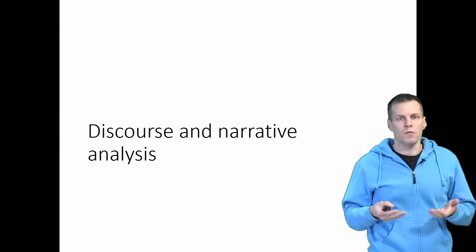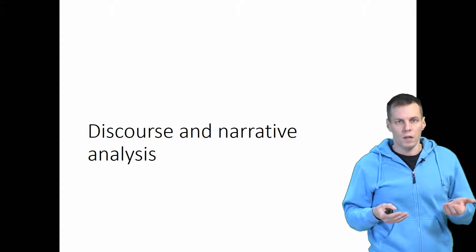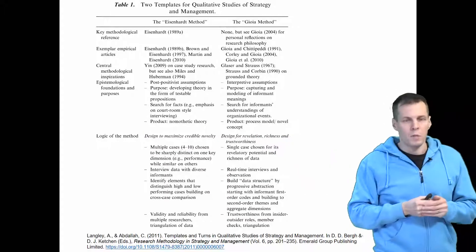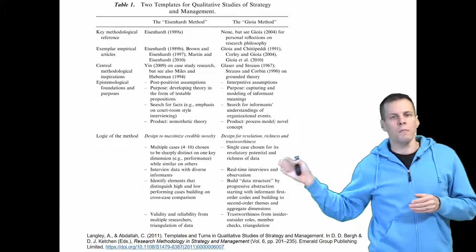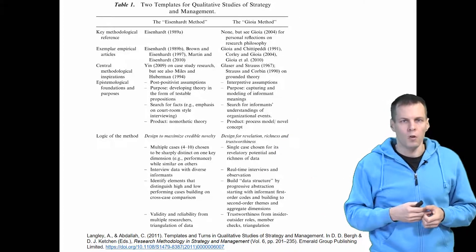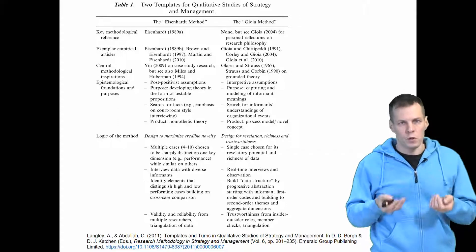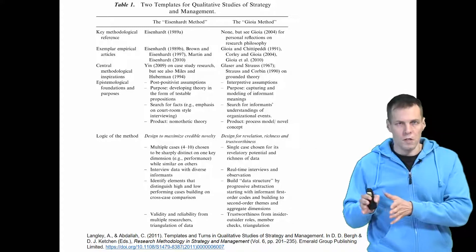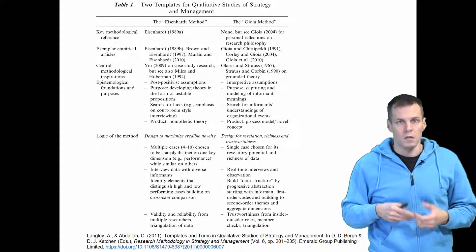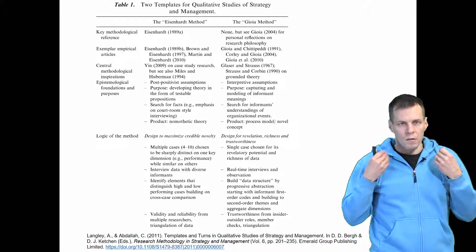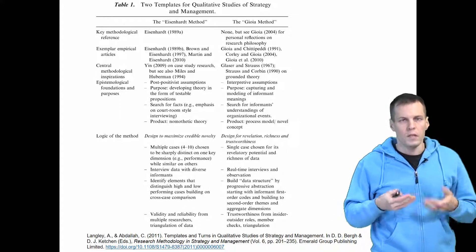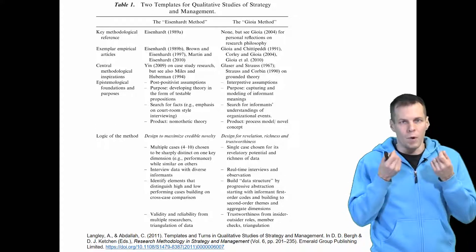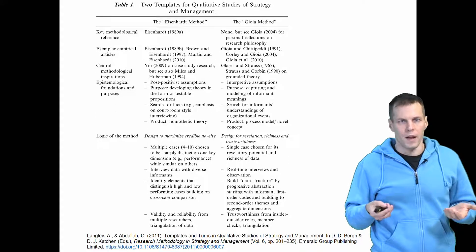How does this approach differ from grounded theory or multiple case study? Let's take grounded theory and multiple case studies as a starting point. These are two templates that researchers like to follow — basically sets of procedures starting from sampling, to how you do interviews, how you do analysis, to how you present study results. These are kind of like recipes that you can follow, but they are not the only kinds of qualitative research we can apply in management research.